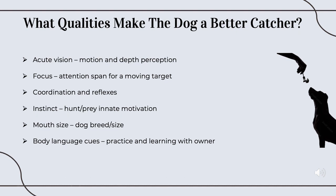The third one is coordination and reflexes. And this one's the main one that Fritz lacks in the video. Fritz does not have any coordination or reflex to catch any item thrown at him, no matter the distance, the height, or the time. The fourth one is going to be instinct. Dogs have to have some sort of hunt or prey instinct to go and be motivated to catch the item as well.